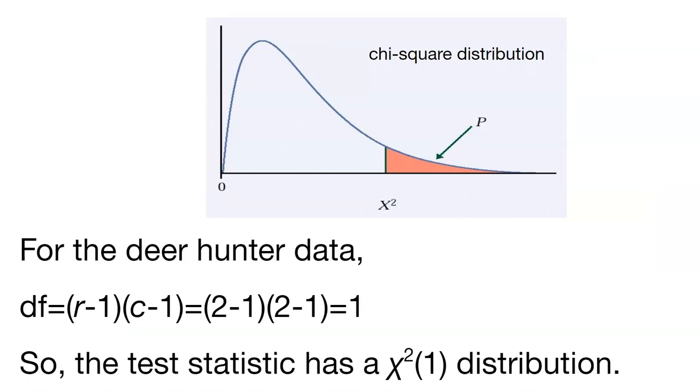For the deer hunter data, we need to find where that critical value is on the chi-square distribution. To do that, we first need to find out what the degrees of freedom are. For the deer hunter data, we just have two rows and two columns, so we have one degree of freedom. So we can say the test statistic has a chi-square with one degree of freedom. We can look to a chi-square table, just like we looked at a z-table, just like we looked at a t-table, and we're going to compare our test statistic to what we would expect with a distribution given one degree of freedom.